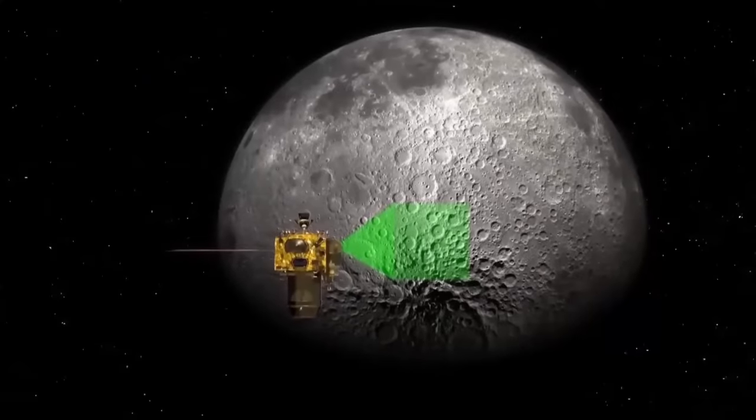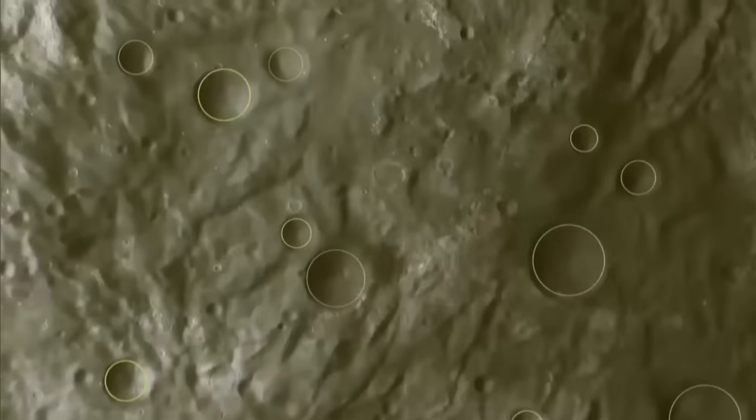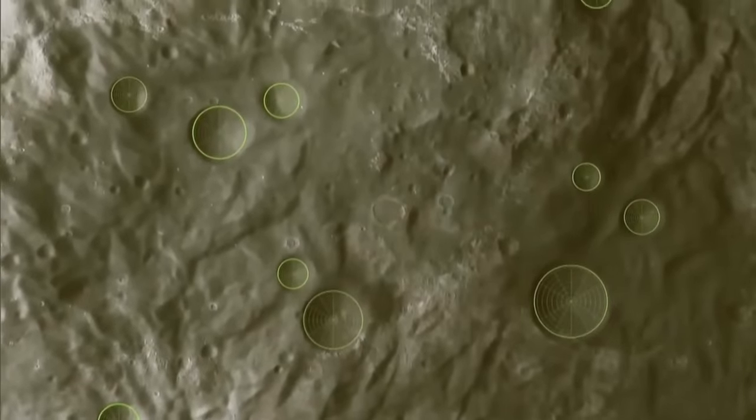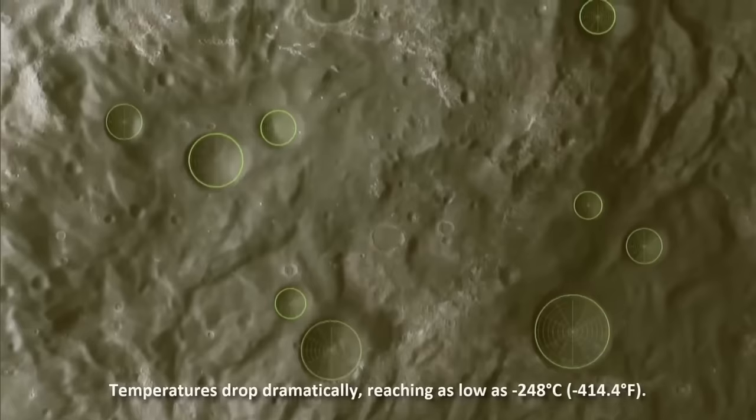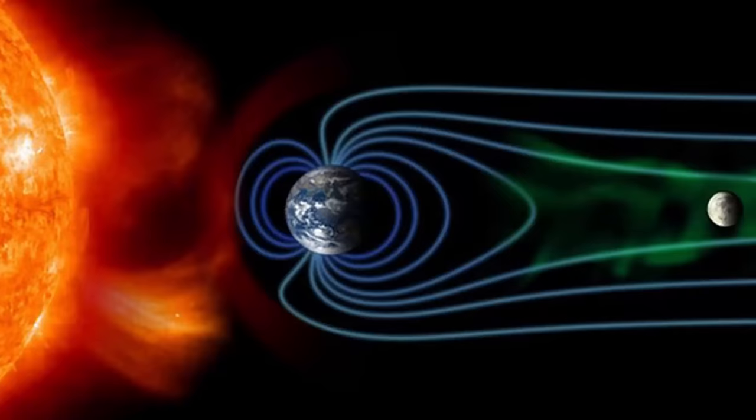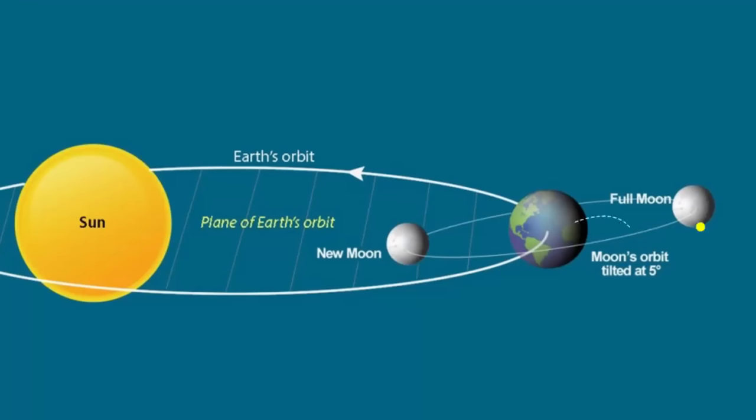Scientists believe that there are deep craters on the Moon where sunlight hasn't reached for billions of years. In these regions, temperatures drop dramatically, reaching as low as minus 248 degrees Celsius. There is no atmosphere on the Moon to heat the Moon's surface. No human has ever set foot in this completely unknown world of the Moon. I am talking about the Southern Pole.